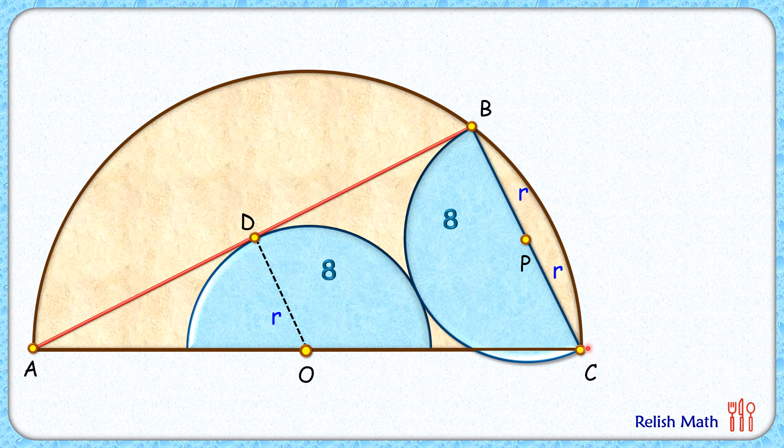Now here we know that radius is perpendicular to the tangent, and thus this angle is 90 degrees. Also, the diameter subtends an angle of 90 degrees, so this angle B is also 90 degrees.